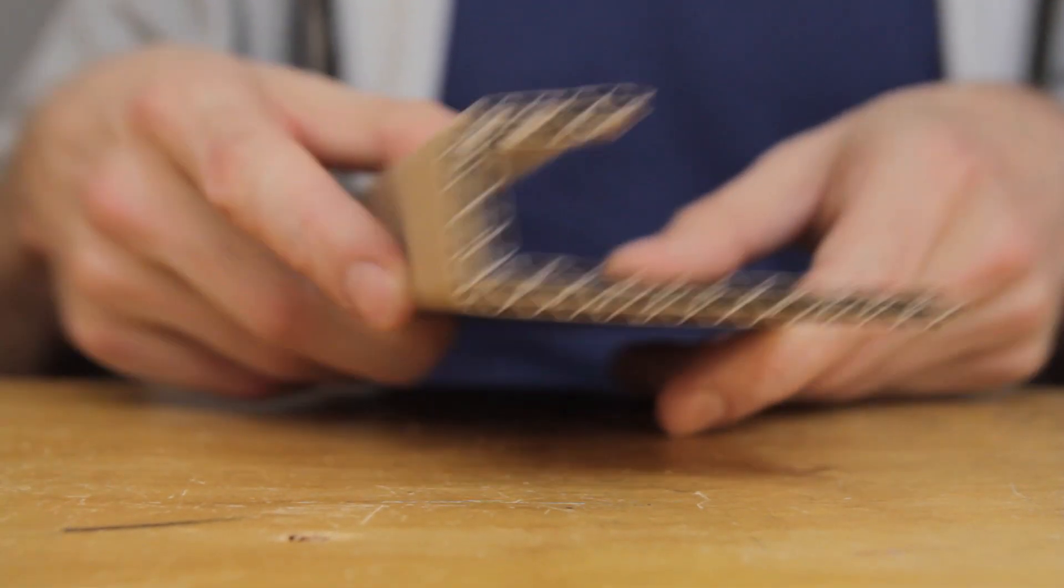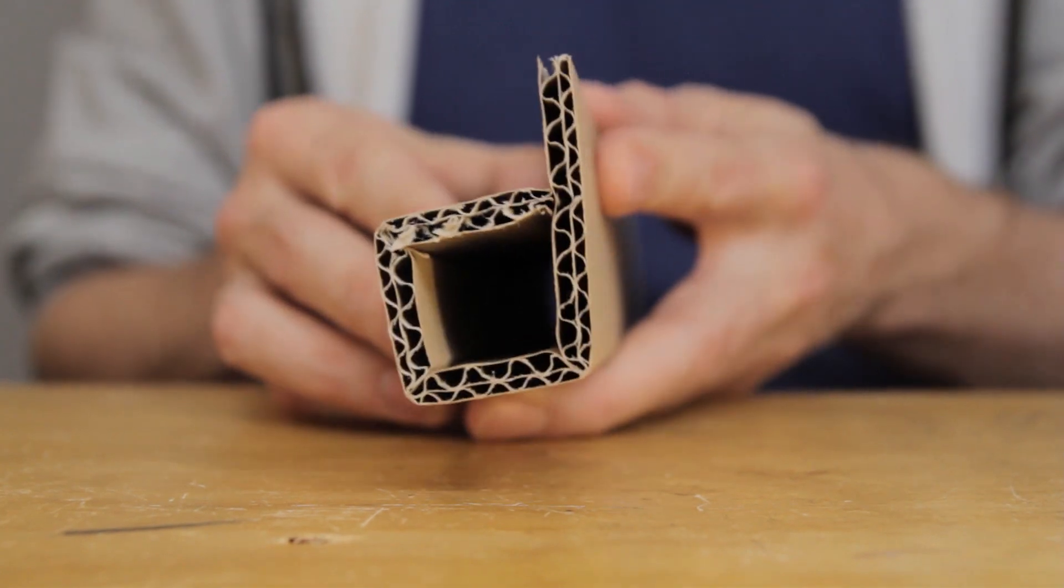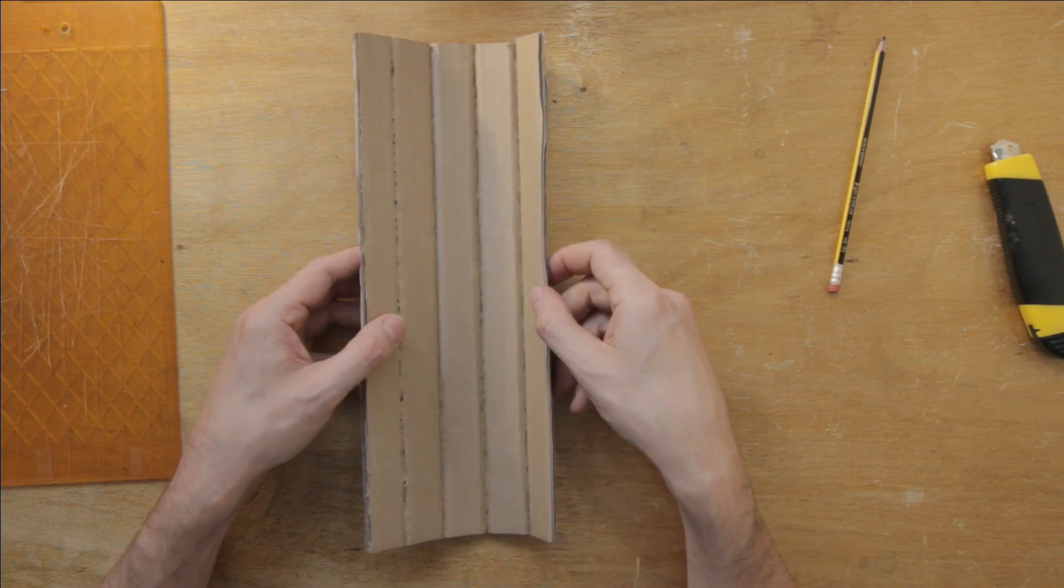Make sure that you only bend it along the lines we made, so that we get a nice square shape like this one. As you can see, that takes care of the basic tube shape, although there is a section left over which I'll take care of in a little bit.